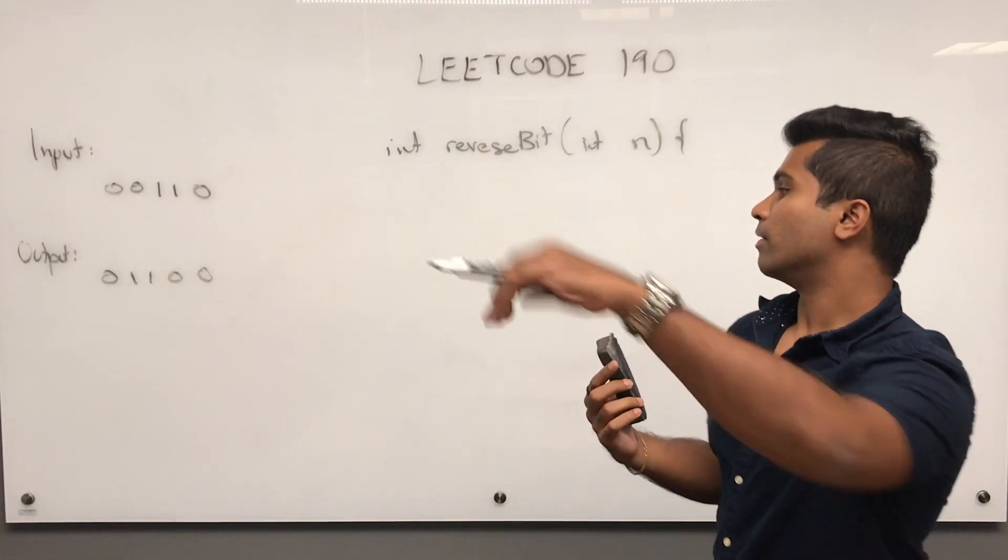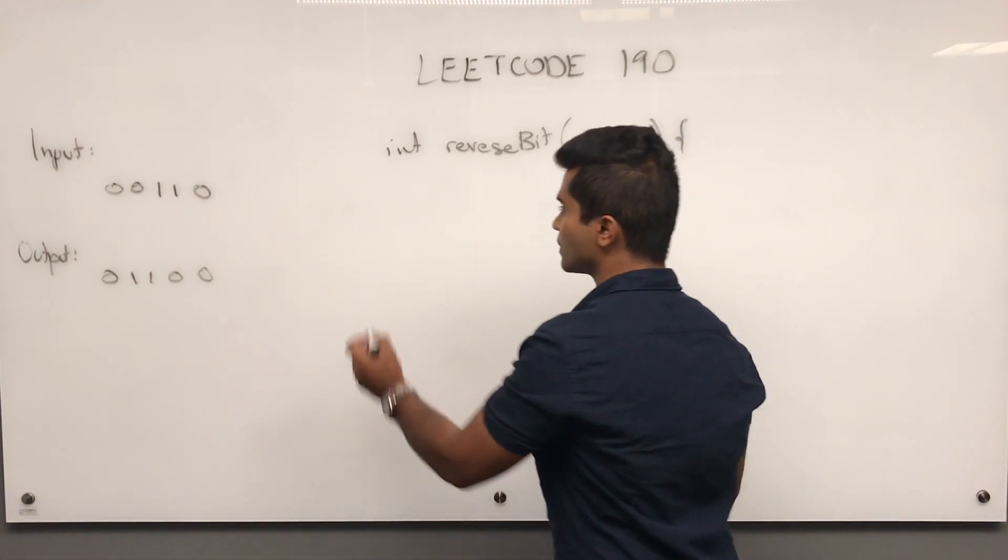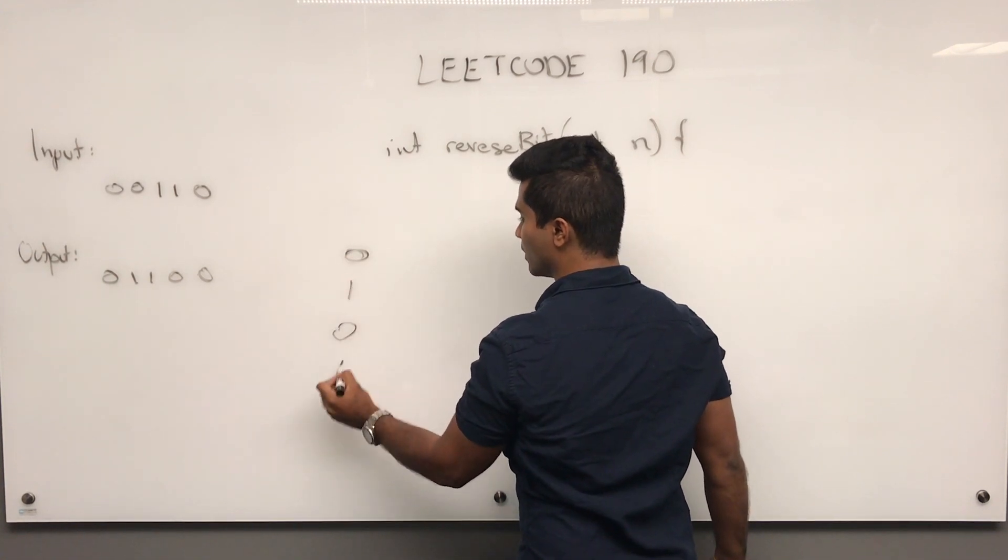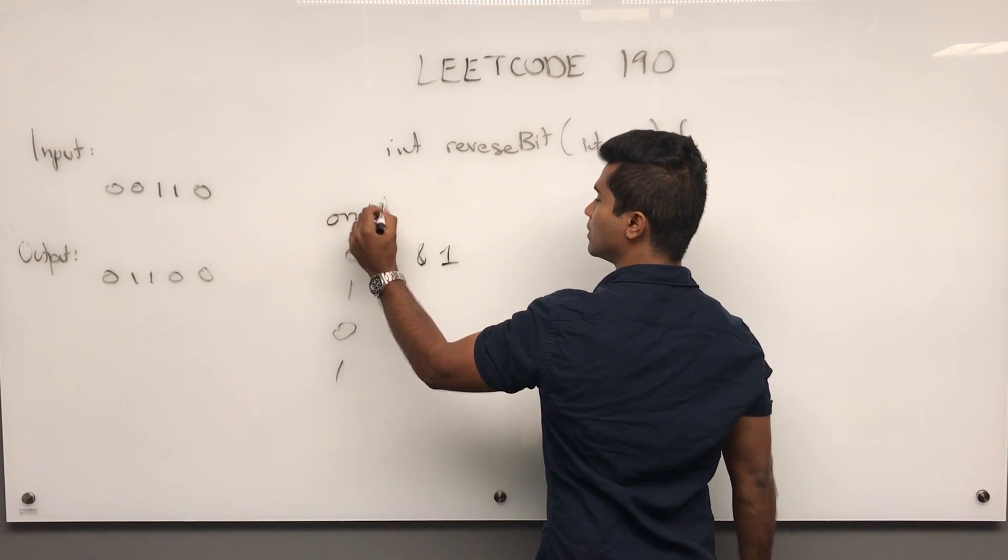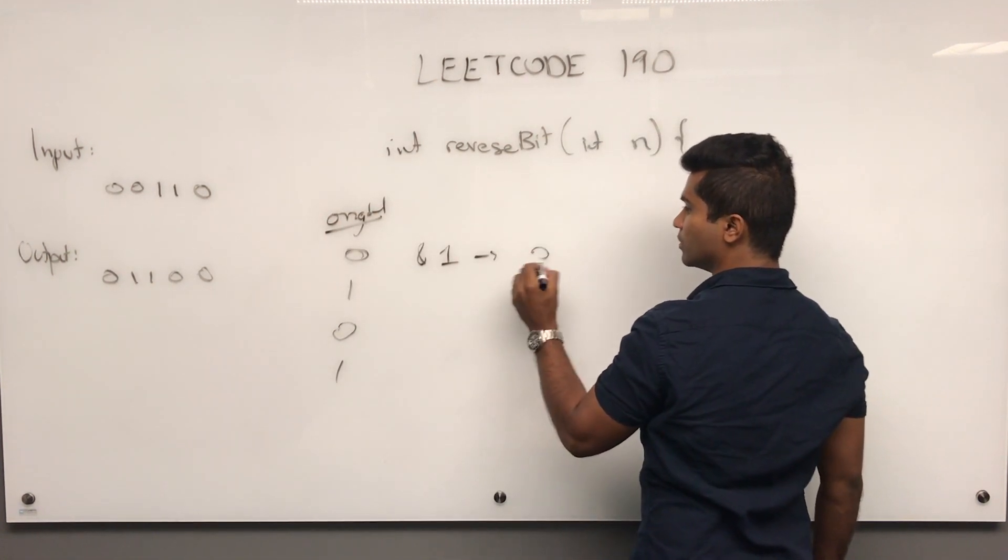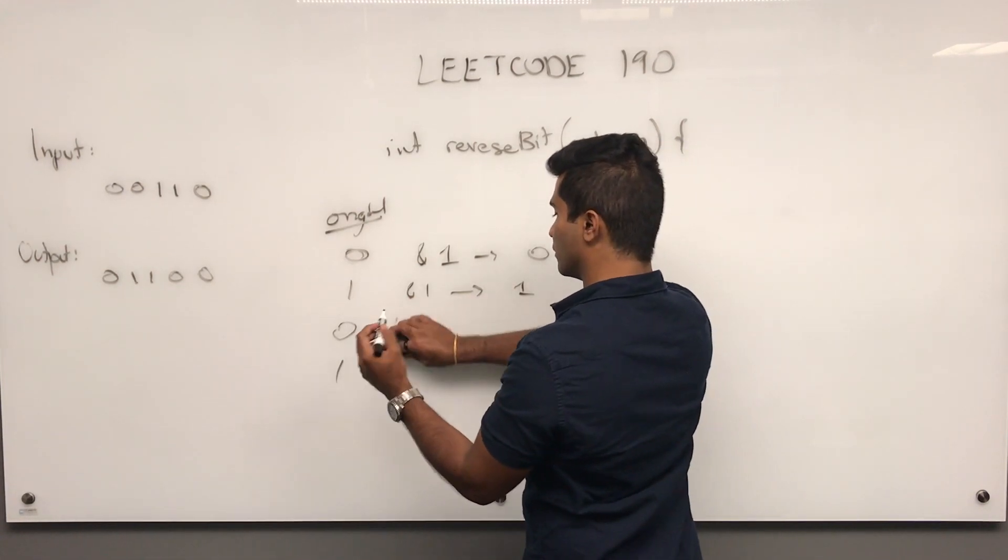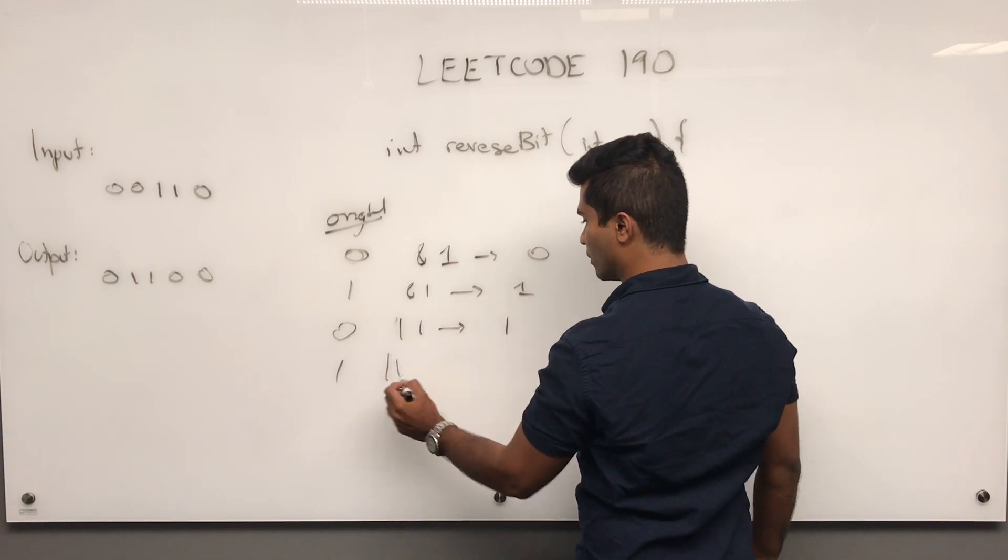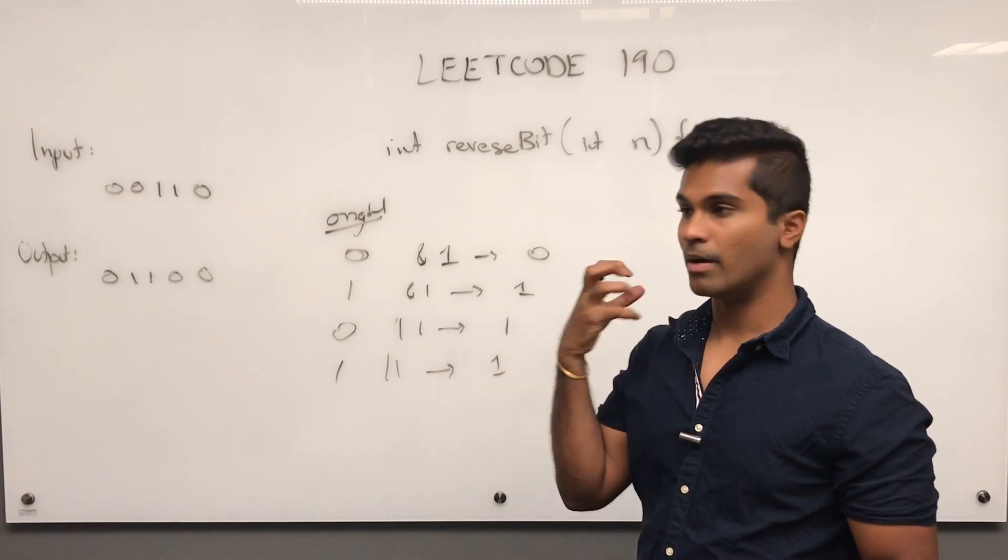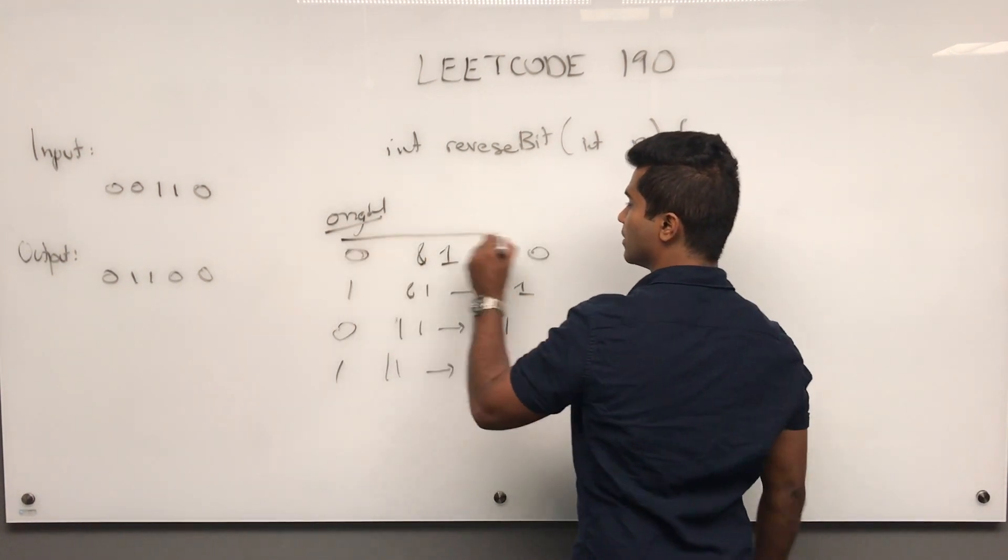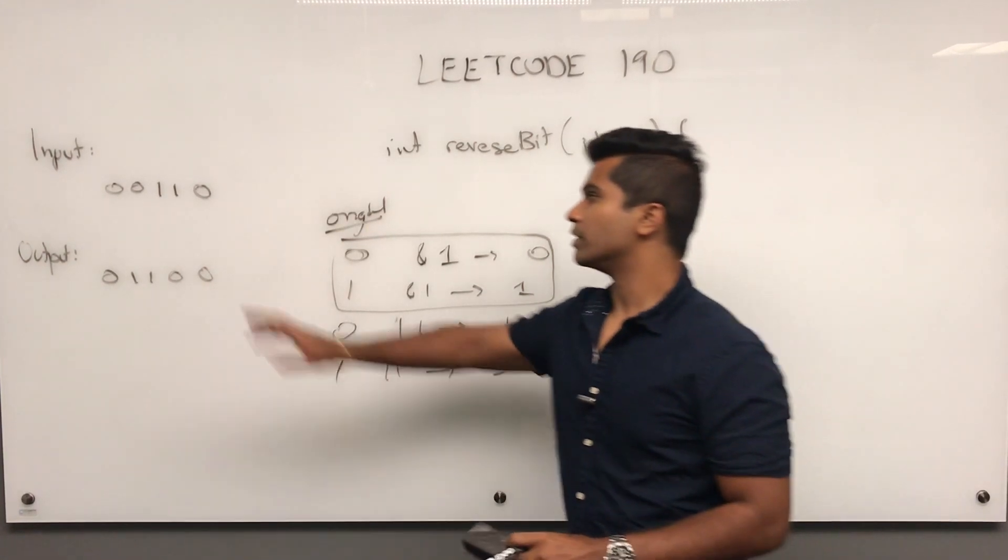Let's go over some basic bit manipulation before we dive in. Say we have 0, 1, 0, 1. What happens if we do AND 1? We get back 0. AND 1 gets back a 1. If we OR 1, we get back a 1. That's how we're going to retrieve each of these bits.